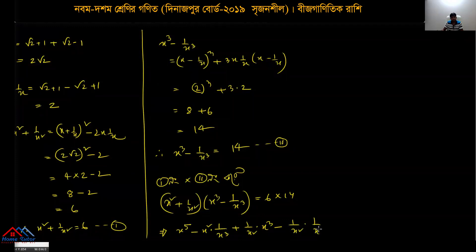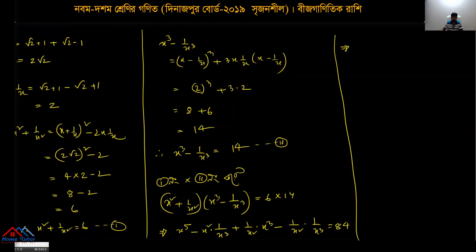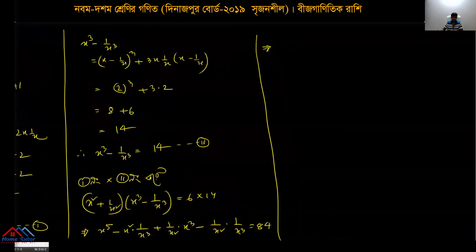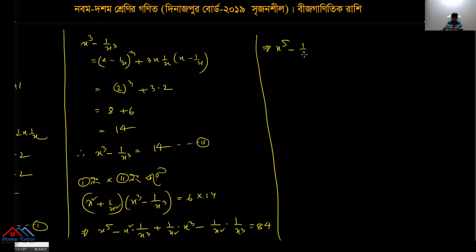x^5 and x³ multiplied together gives 114 or 84. What do we get? x^5 is the answer. What else? Below x, above is x², below that is 1/x.